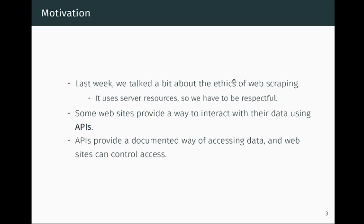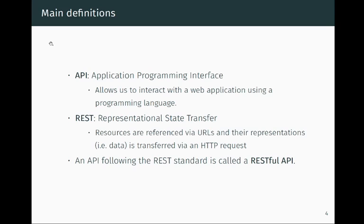Last week we talked about the ethics of web scraping — specifically, how web scraping uses server resources, so to be a good web citizen we have to be respectful and not abuse them. Some websites provide a way to interact with their data using what are called APIs, or application programming interfaces, which address this issue. APIs are also usually well documented, giving us a well-defined way to access data rather than trying to figure out the structure of a web page.